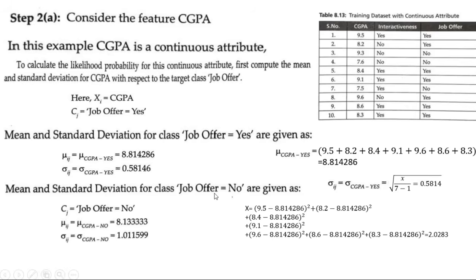Now repeat for job offer no. The mean of CGPA where job offer is no: sum up 9.3 + 7.6 + 7.4 divided by 3 gives μ = 8.1333. The standard deviation is calculated as: √((9.3−8.1333)² + (7.6−8.1333)² + (7.5−8.1333)²) / (3−1). After applying the formula, we get the standard deviation for CGPA no.